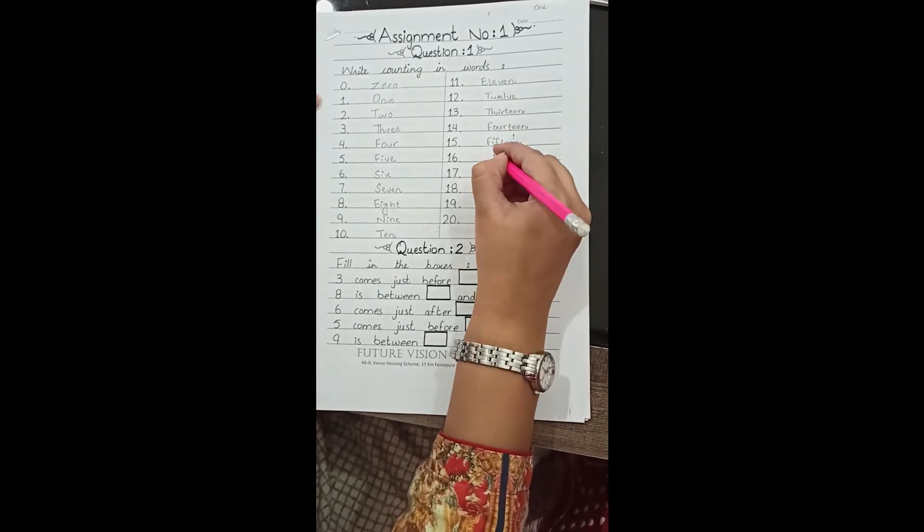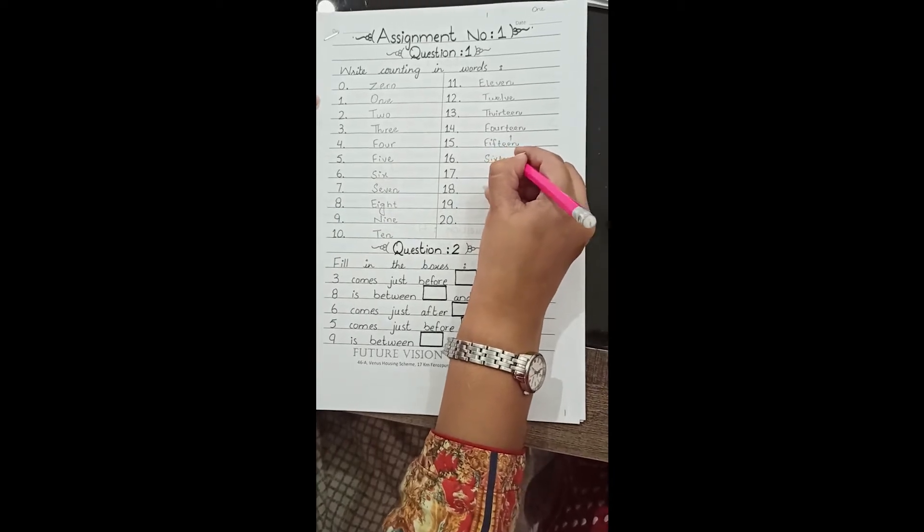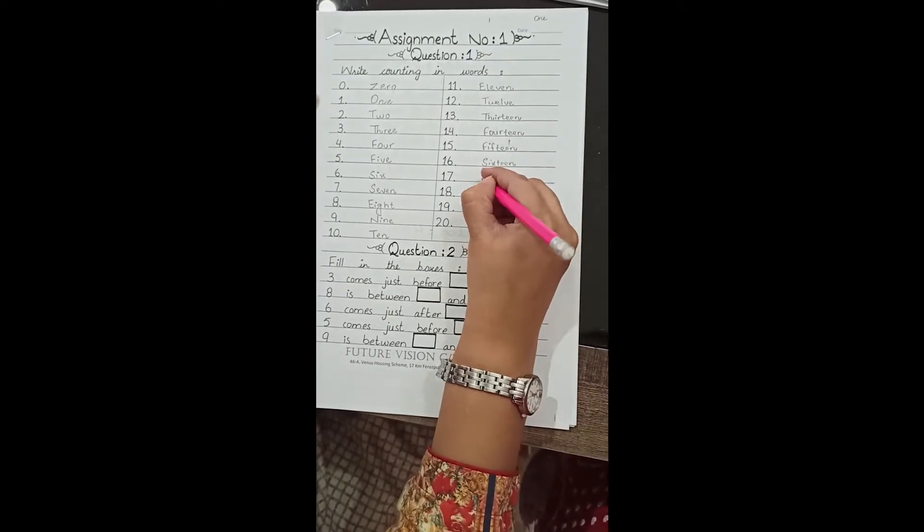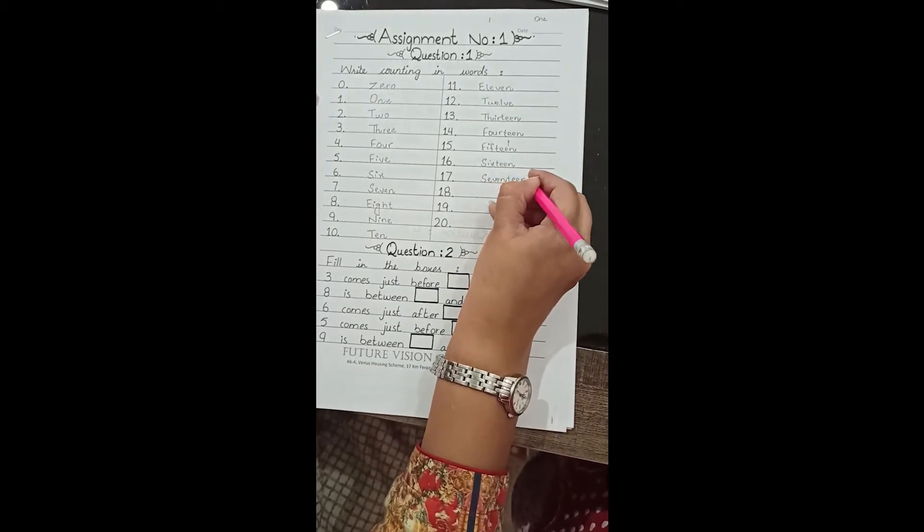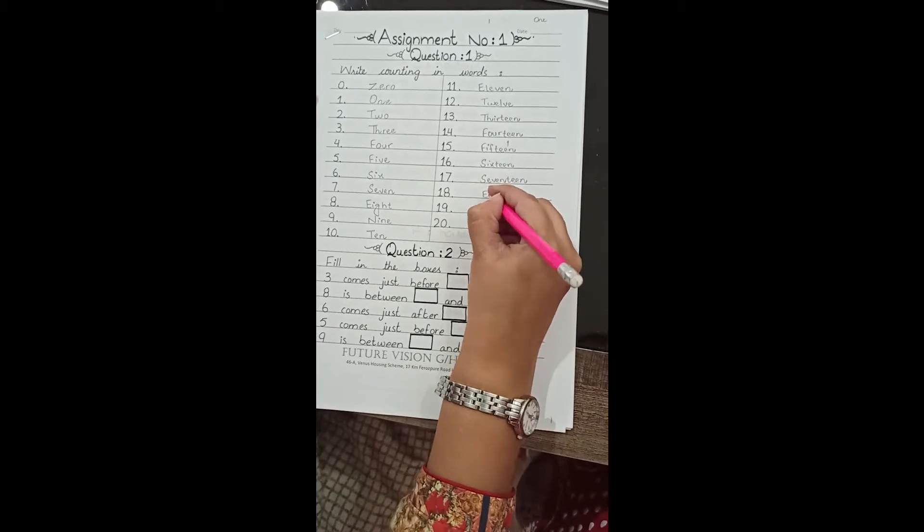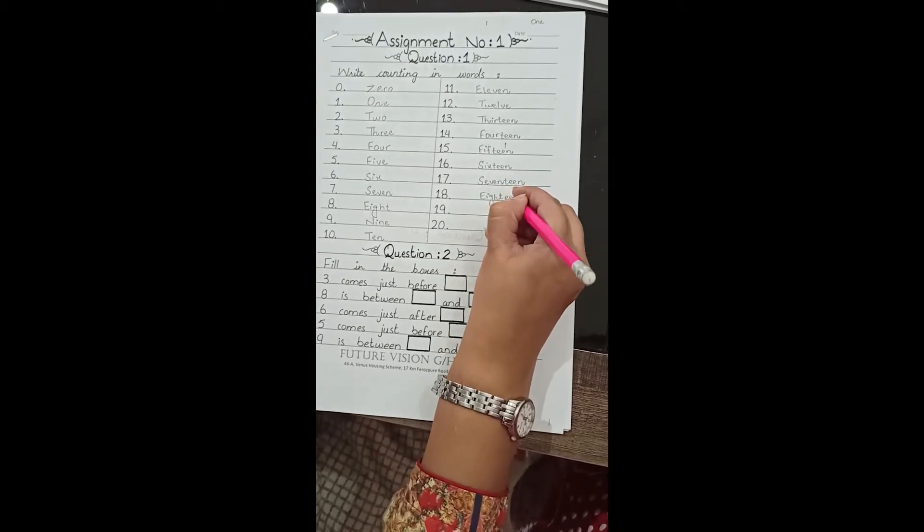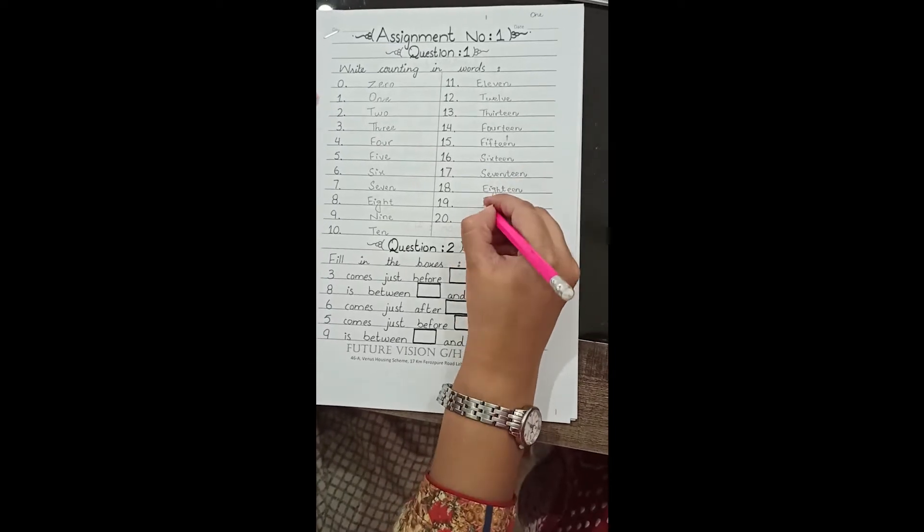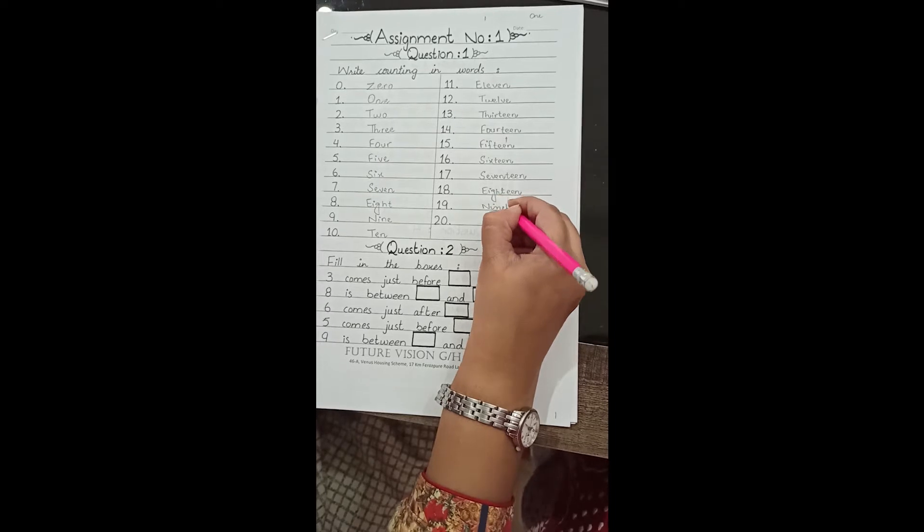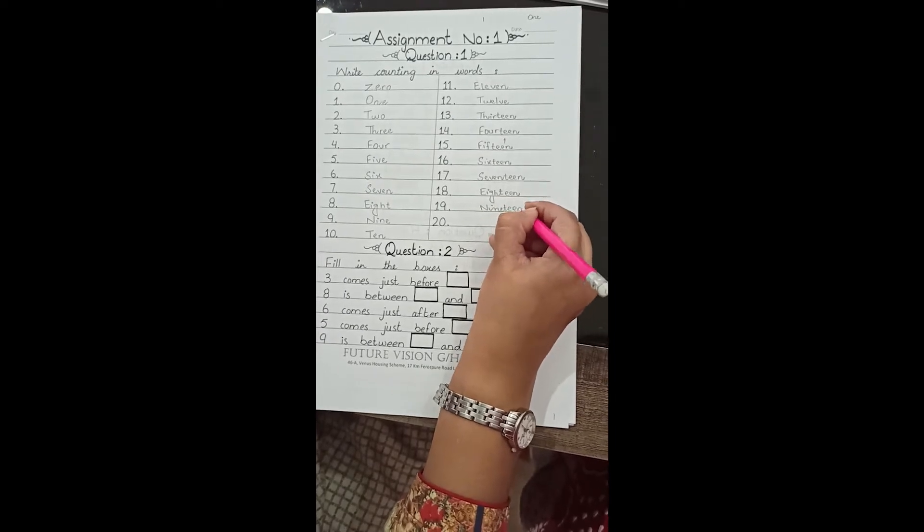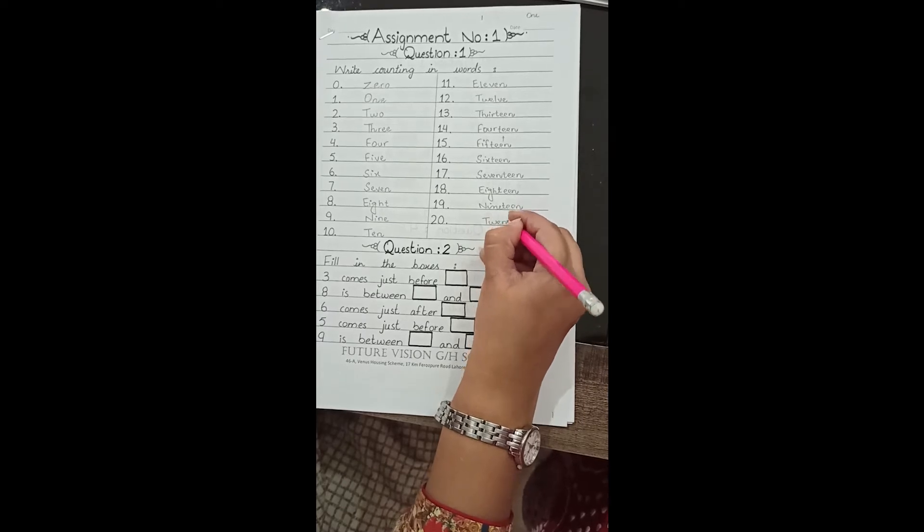Sixteen, 16. Seventeen, 17. Eighteen, 18. Nineteen, 19. Twenty: t-w-e-n-t-y, 20.